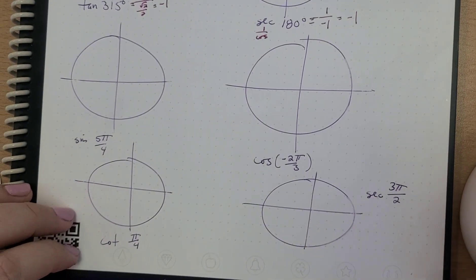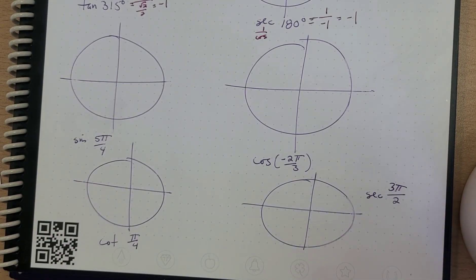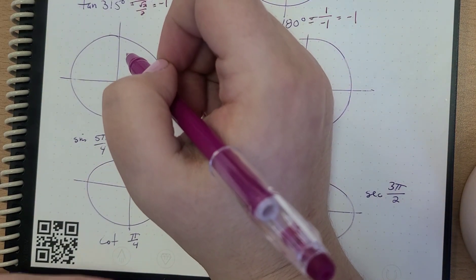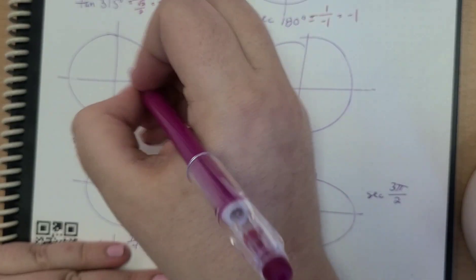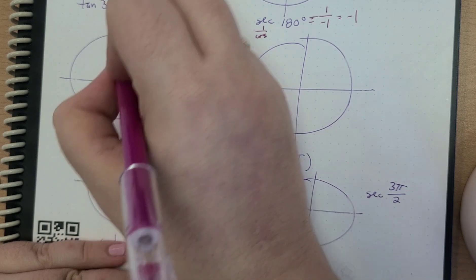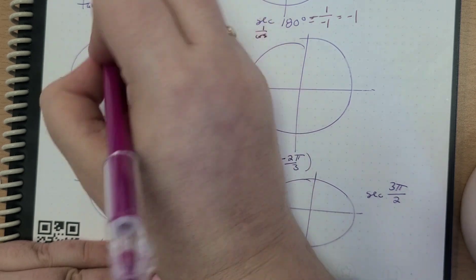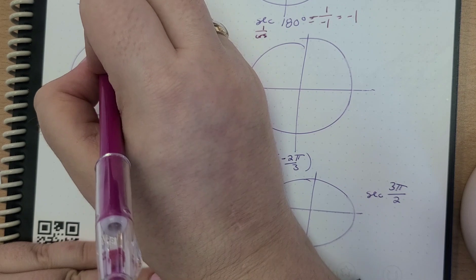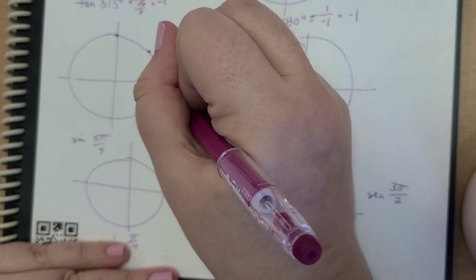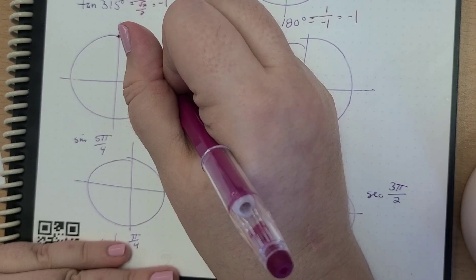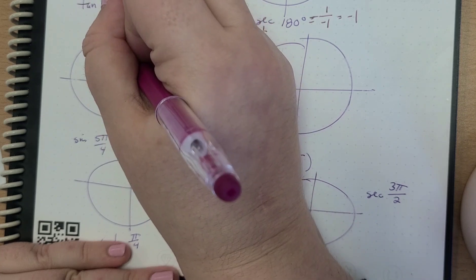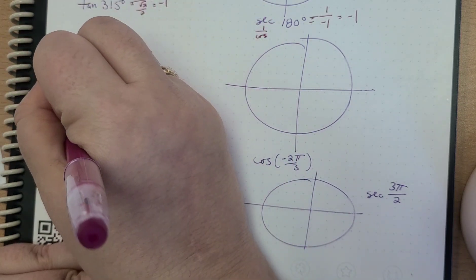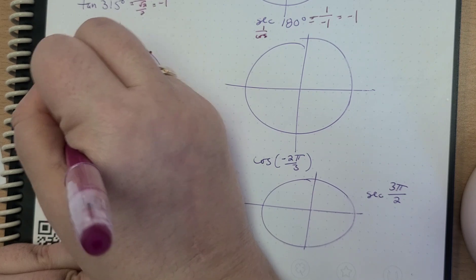Let's do a little bit with radians. Here we have 5π/4. So 5π/4 — if we go by π/4, this would be π/4, two π/4, three π/4, four π/4, five π/4 right here.